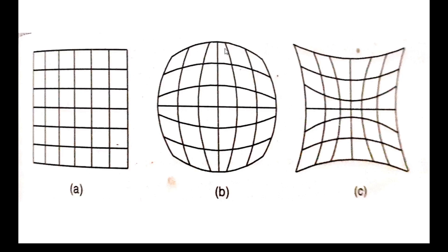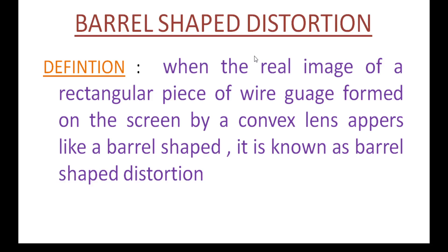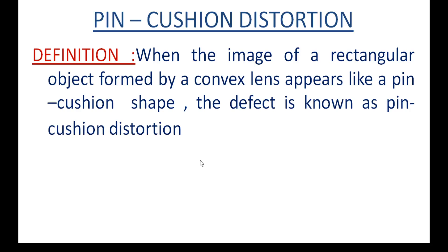As axial distance increases away from the axis, the magnification decreases away from the axis. This is barrel shape distortion — when the real image of a rectangular piece of wire gauze formed on the screen by a convex lens appears like a barrel shape, it is known as barrel shape distortion. When the image formed by a convex lens appears like a pin cushion, it is called pin cushion distortion.